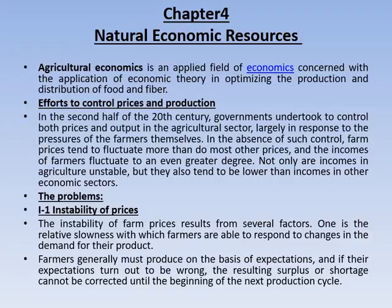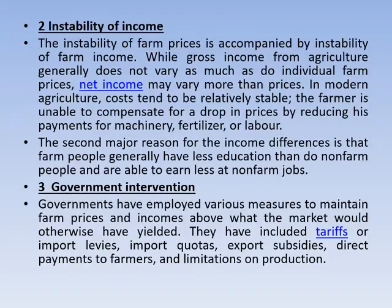The instability of farm prices results from several factors. First is the relative slowness with which farmers are able to respond to changes in the demand for their products. Farmers generally must produce on the basis of expectations, and if their expectations turn out to be wrong, surpluses or shortages cannot be corrected until the beginning of the next production cycle. Second, price instability is reflected in income instability.